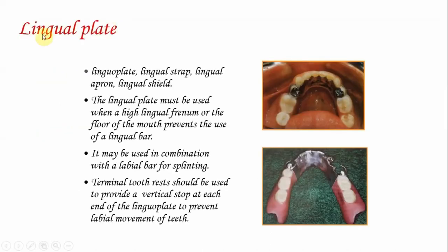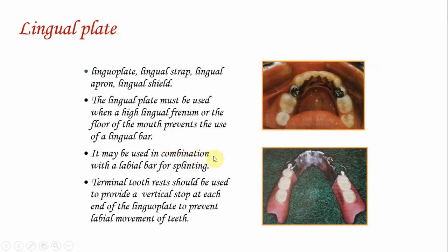The next mandibular major connector is the lingual plate, also known as lingual strap, lingual apron, or lingual shield. The lingual plate must be used when a high lingual frenae or the floor of the mouth prevents the use of a lingual bar. It is a half pear shaped lingual bar with a thin solid piece of metal extending from the superior border, carried into the lingual surface of the teeth presenting a scalloped appearance. It may be used in combination with a labial bar for splinting, and terminal tooth rests should be used to provide a vertical stop at each end.